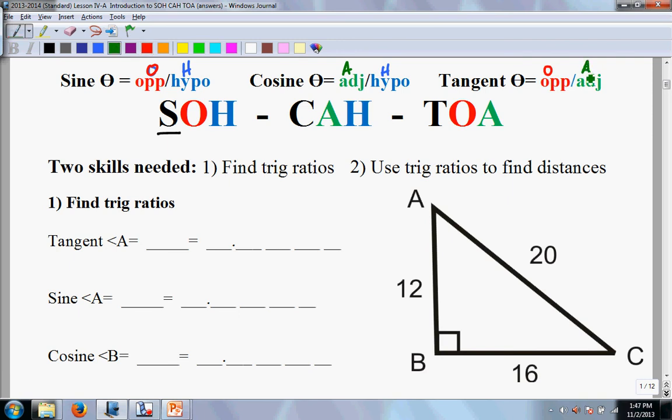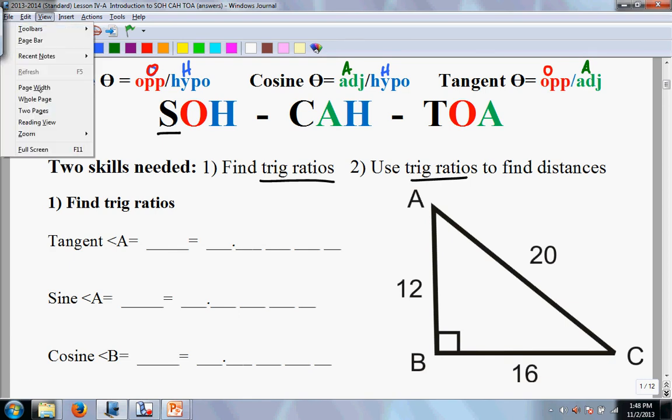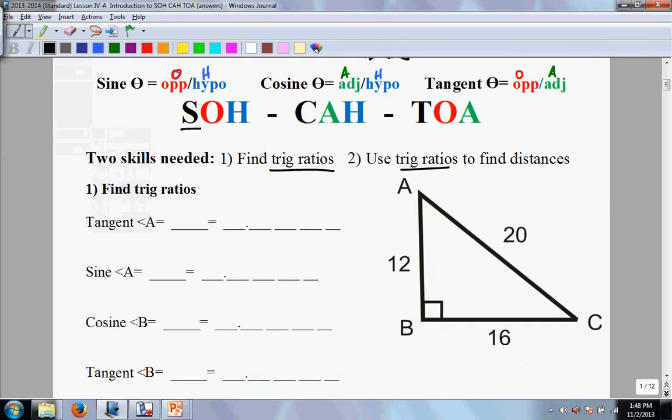We're just going to do a couple problems together. There are two skills that you really need to master when dealing with trigonometry. One is finding a trig ratio. Two is using a trig ratio to find distances. To find trig ratios, I'm going to give you an example here. We're going to find these four trig ratios using SOH CAH TOA. First we're going to work with angle A.